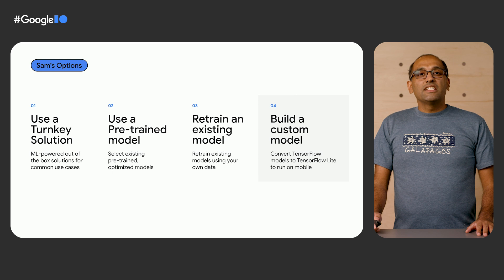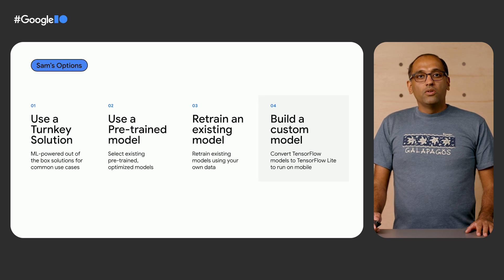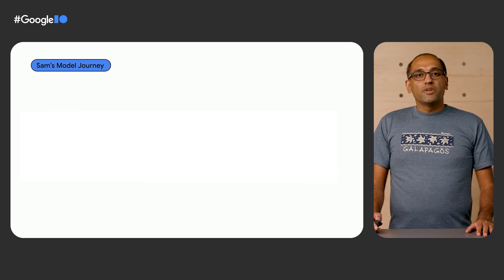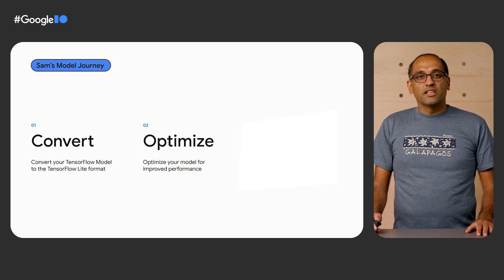Sam explores further and understands that they need to start from a custom TensorFlow model, either building one from scratch — which involves an enormous amount of training data — or selecting an existing TensorFlow model and optimizing it for mobile and edge devices. Sam reaches out to the TensorFlow Lite community, who helps Sam discover an existing TensorFlow model that fits their needs. Now the challenge is to convert and optimize the TensorFlow model to run well on mobile.